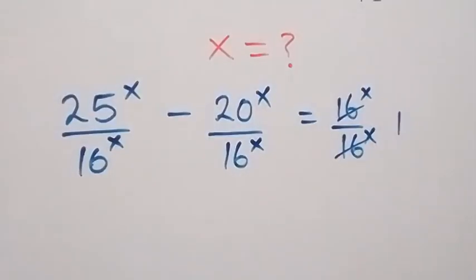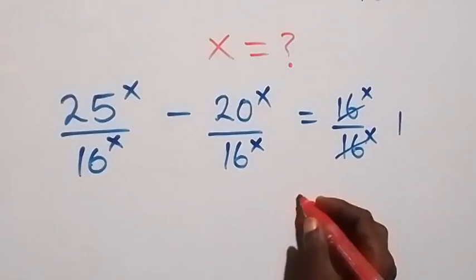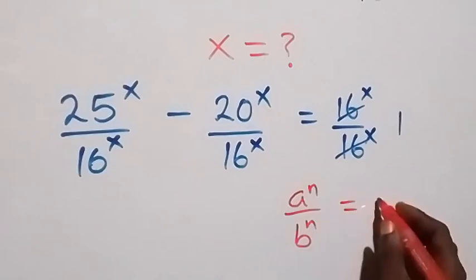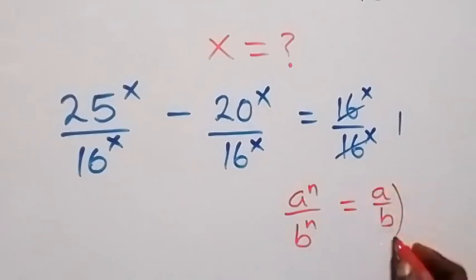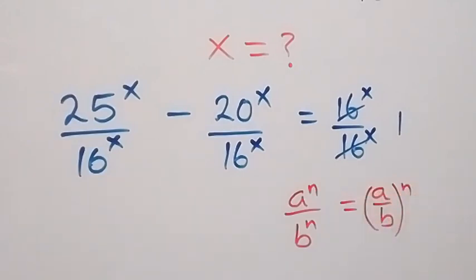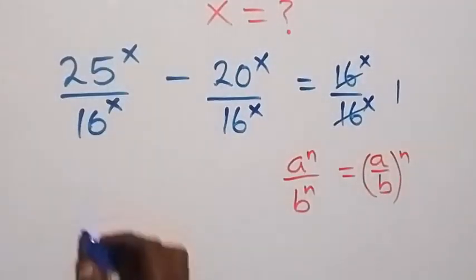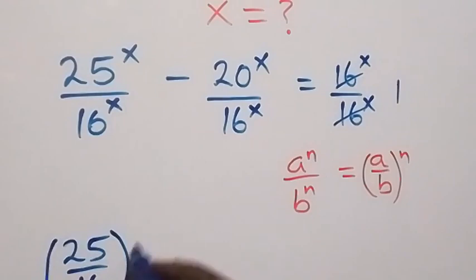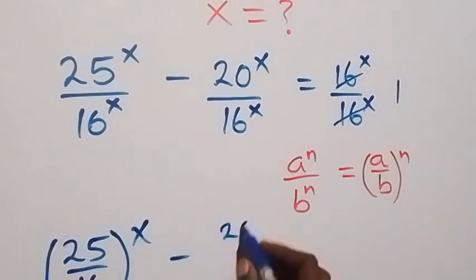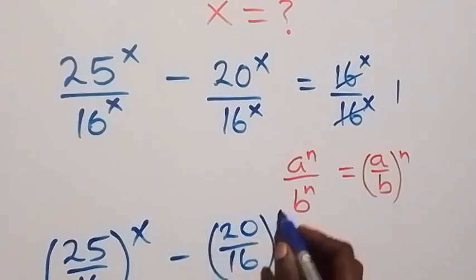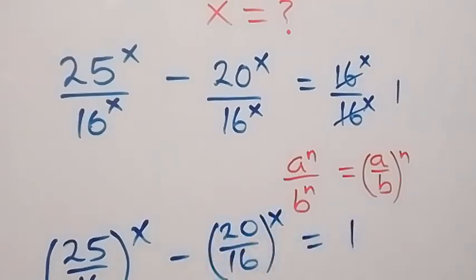Then from what we have here, we apply the law of indices: A raised to power n over B raised to power n is the same as A over B, all raised to power n. Now when we apply this from what we have here, this can be written as (25/16)^x minus (20/16)^x equals 1.